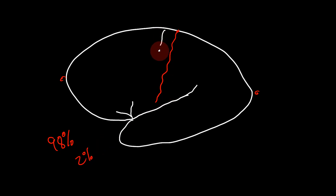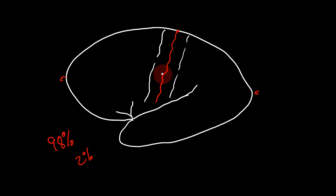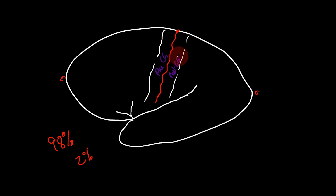Right in front of the central sulcus you have the precentral sulcus, and just behind it you have the postcentral sulcus, which demarcates the two gyri — the precentral gyrus and the postcentral gyrus. This is how you identify the central sulcus in a specimen: by identifying these two gyri running from superior to inferior, and between them you find the central sulcus, which intersects the superior medial margin and does not intersect the sylvian fissure.